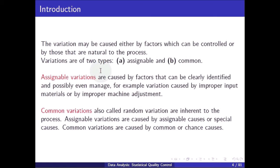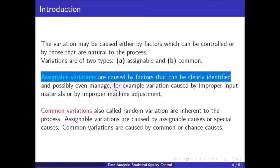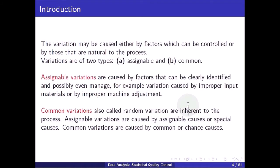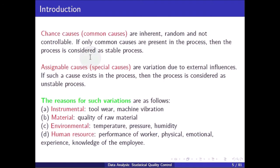Variations are of two types: assignable and common. Assignable variations are caused by factors that can be clearly identified and possibly even managed — for example, variation caused by improper input materials or by improper machine adjustment. Common variations, also called random variations, are inherent to the process. Assignable variations are caused by assignable or special causes; common variations are caused by common or chance causes, which are inherent, random, and not controllable.